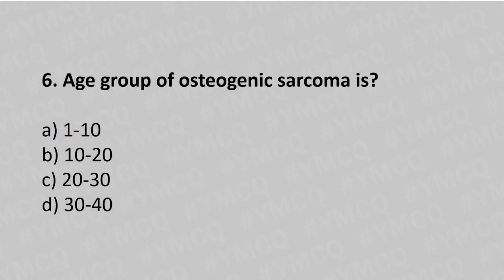Question number six: the peak age group of osteogenic sarcoma is option A 1 to 10, option B 10 to 20, option C 20 to 30, option D 30 to 40. The answer is option D, 30 to 40.